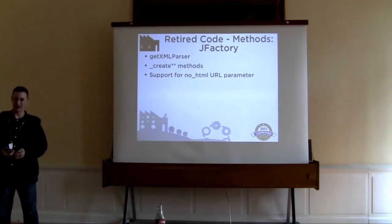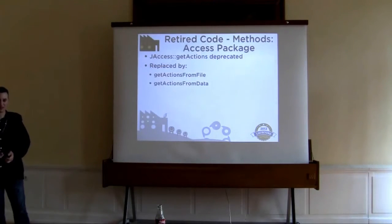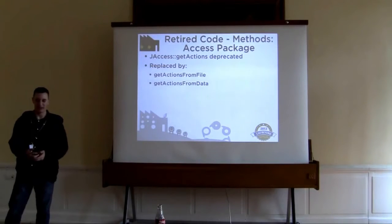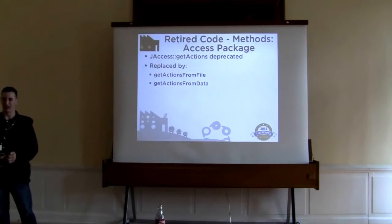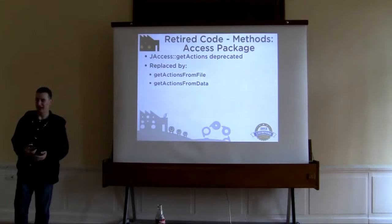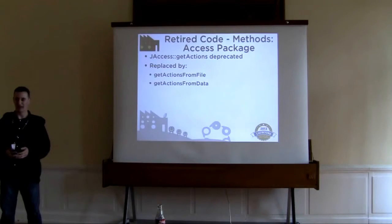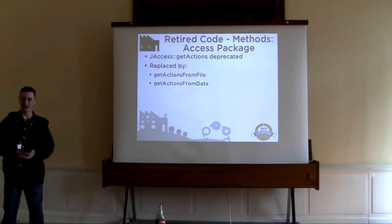What this changes in createDocument is that the noHTML parameter used to allow you to get a JDocumentRaw instance; now you can only get a JDocumentHTML instance. In the access package, we've deprecated JAccess's getActions method. Two new methods have come about as its replacement: GetActionsFromFile and GetActionsFromData. GetActionsFromFile will try to load your access.xml file and parse it, while GetActionsFromData will work directly with a SimpleXML object.